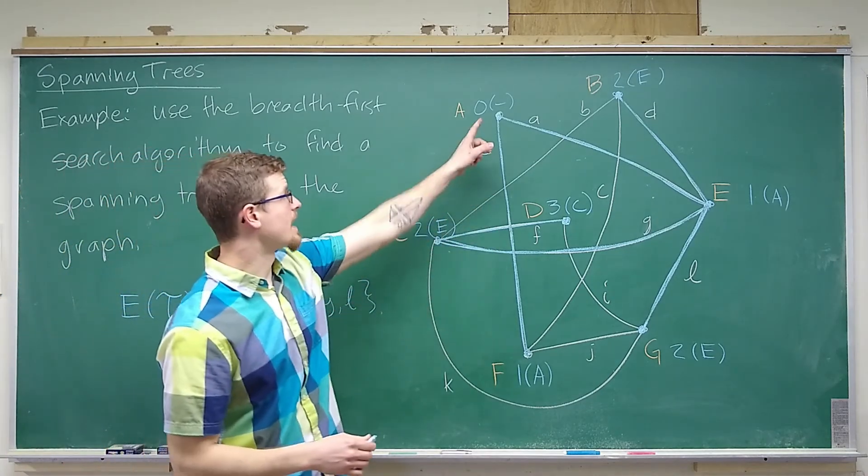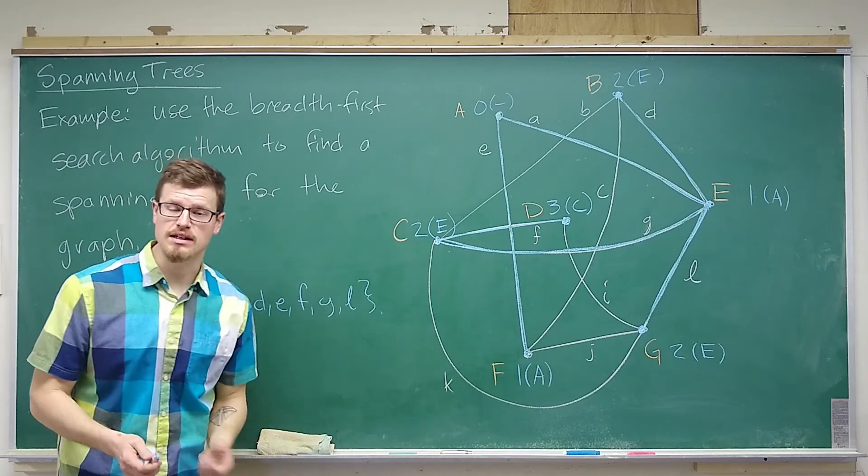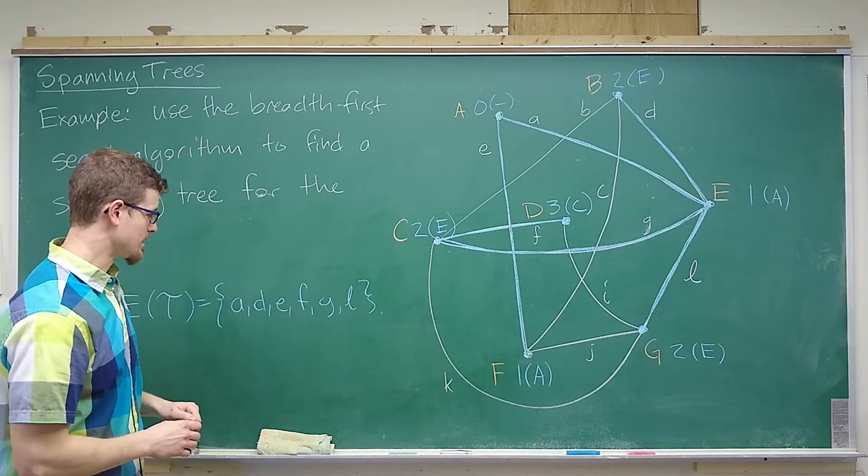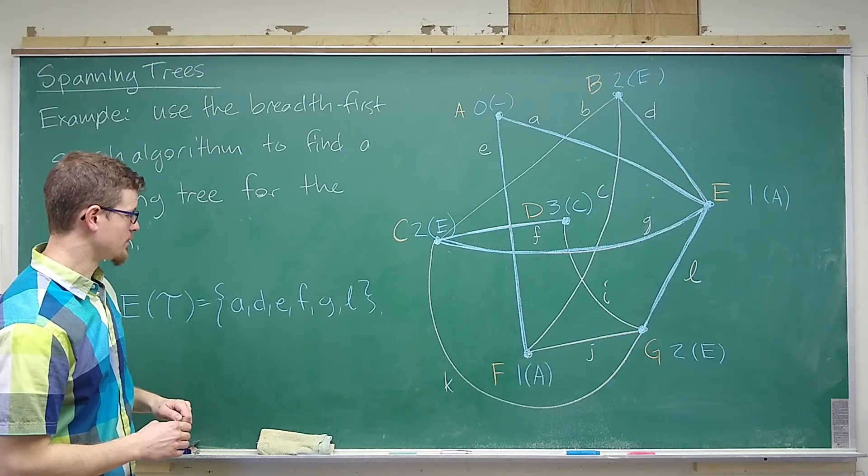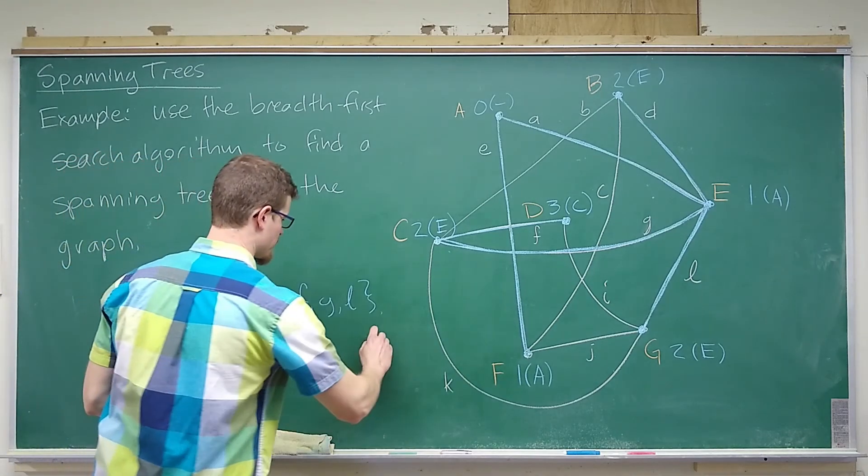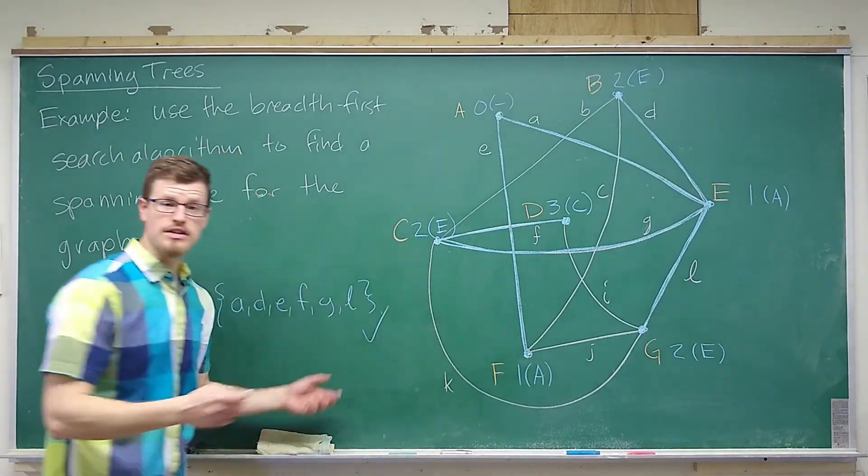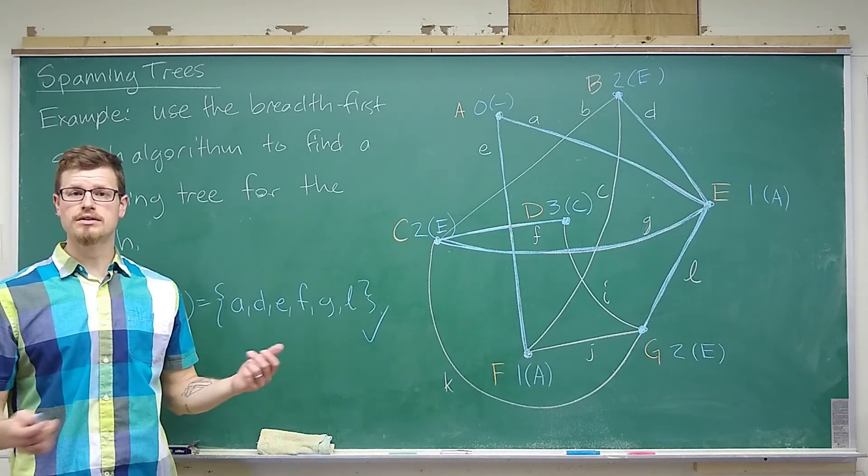We just need to make sure that we have one additional characteristic. For example, we can see that it's connected. Everything is connected to A through its shortest path. So, it's connected and it satisfies the vertex and edge relationship. This is our tree, and that gives the edge set of our tree.